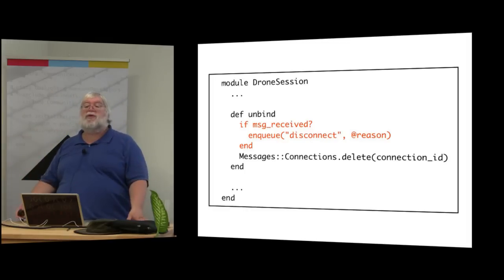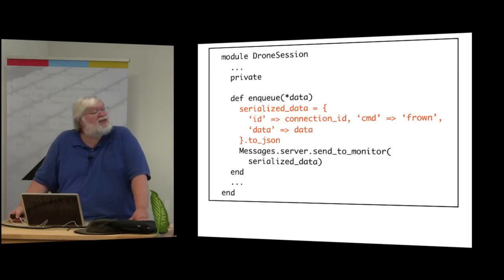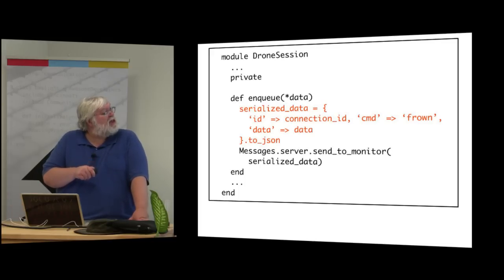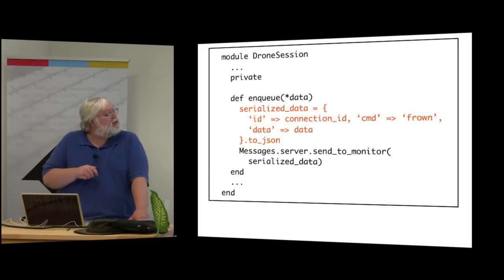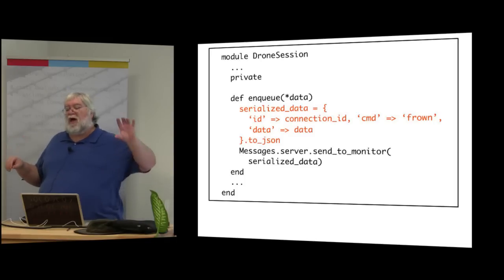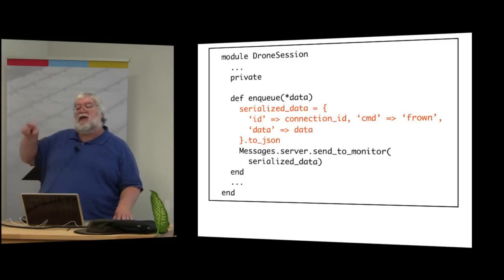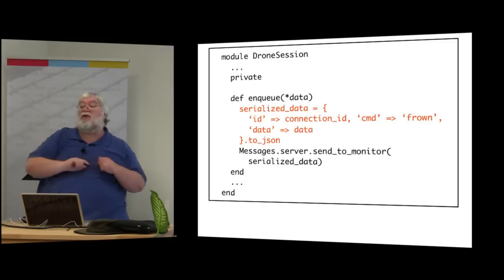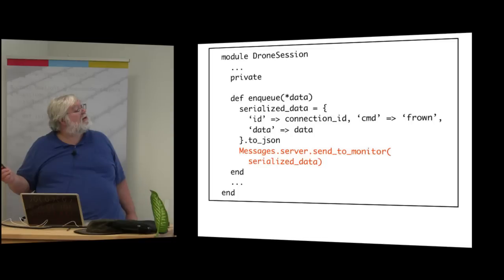The enqueue helper method sends data to the monitor. I build a hash with the connection ID, flag it as a FROWN command, pass on the data, convert to JSON, and send it to the monitor server. I have two types of sessions: one monitor session talking to the single monitor object, and multiple drone sessions each talking to an individual drone. Data comes in from a drone, gets tagged with an ID, and gets sent to the single monitor instance.